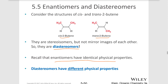Enantiomers have identical physical properties. Diastereomers have different physical properties, so you can usually separate them by boiling point or even by solubility. Sometimes the stereochemistry of a molecule can affect its solubility, making it more or less soluble in a solvent. Having different physical properties allows us to separate diastereomers, but not enantiomers.